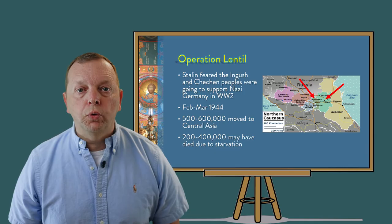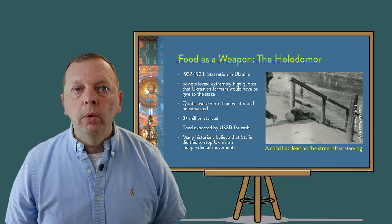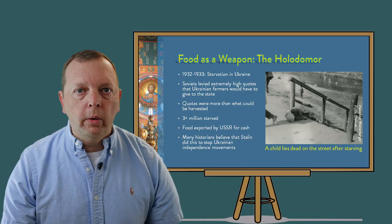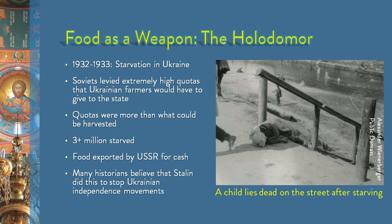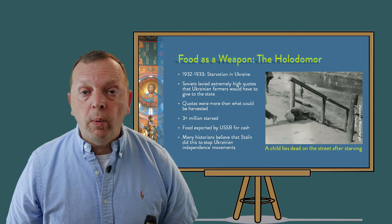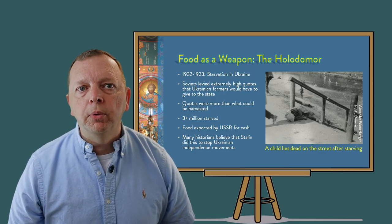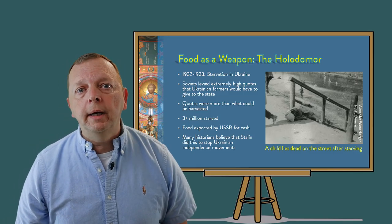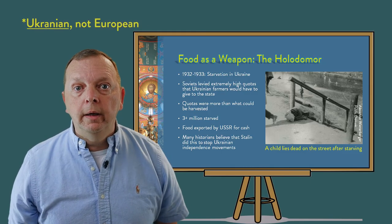Another tool of control used by Stalin was controlling food. The Ukrainians felt the brunt of this during the Holodomor between 1932 and 1933. In 1932, the Soviet Union imposed high quotas on how much food the farms — now under government control — would have to give to the state. However, the quotas imposed were far higher than what the farmers could supply, leaving very little to survive on or even to use as seed to plant for the next year. The result was that while the Soviets were selling the food raised by Ukrainian farmers for export, at least 3 million people starved to death. Many historians suggest that Stalin was using food as a weapon to crush Ukrainian independence movements, as Ukraine had been an independent country between 1917 and 1922.